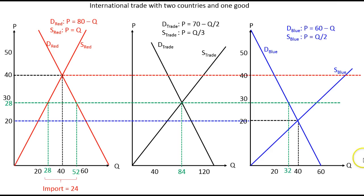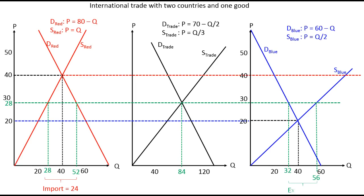In blue country, when the price rises from 20 to 28, demand falls from 40 down to 32. However, since producers are getting a higher price for their units, producers in blue country are willing to produce more — increasing production to 56. This creates an excess supply of 24 units, which equals the exports from blue country, matching exactly the 24 units imported by red country.